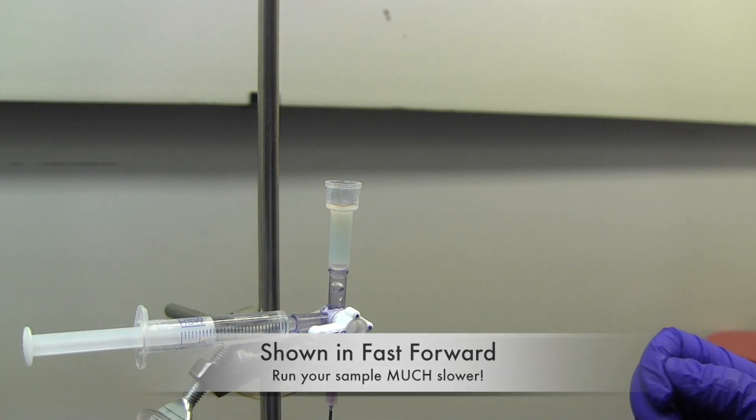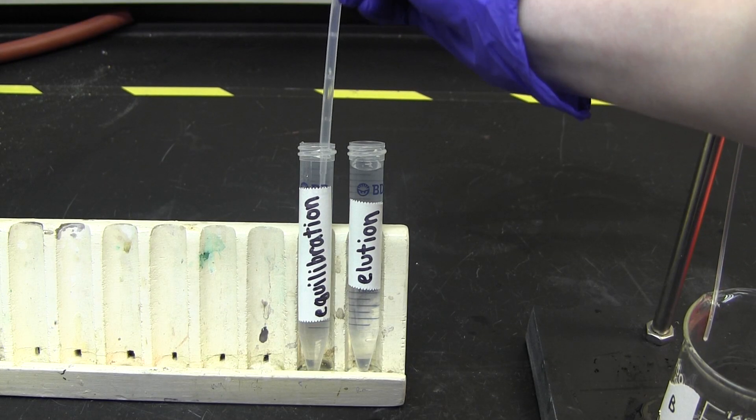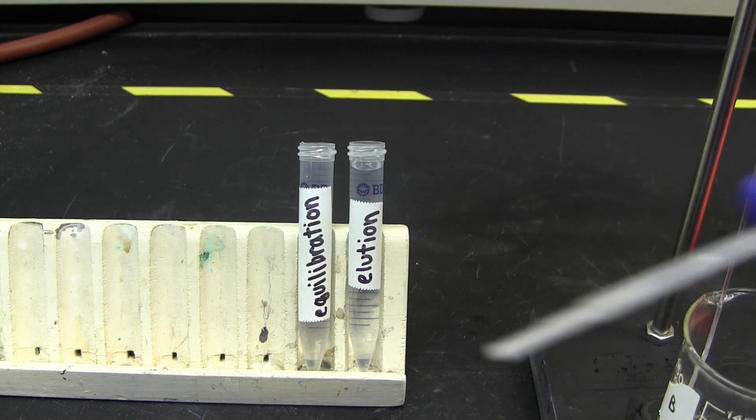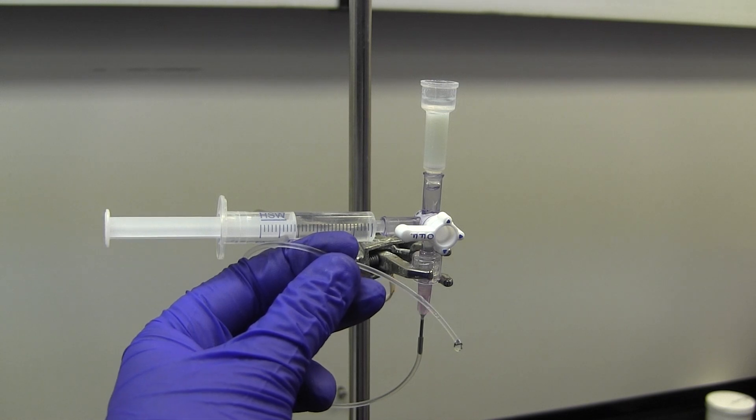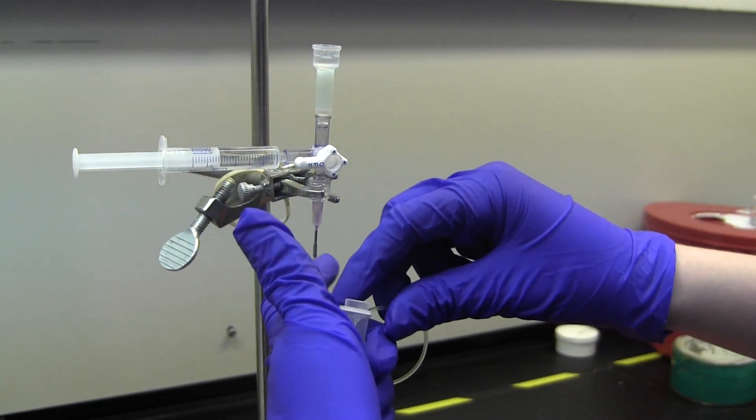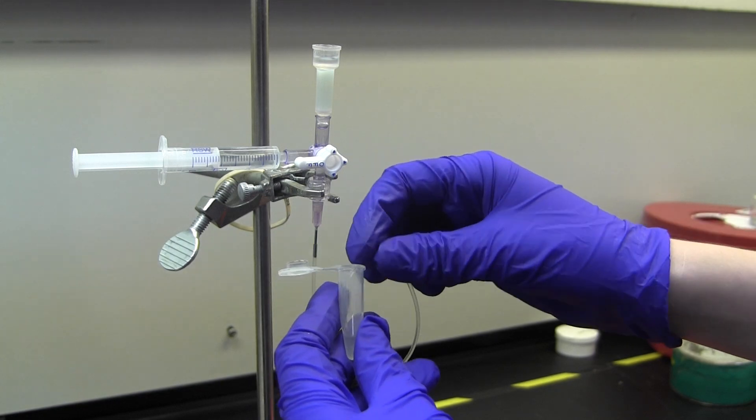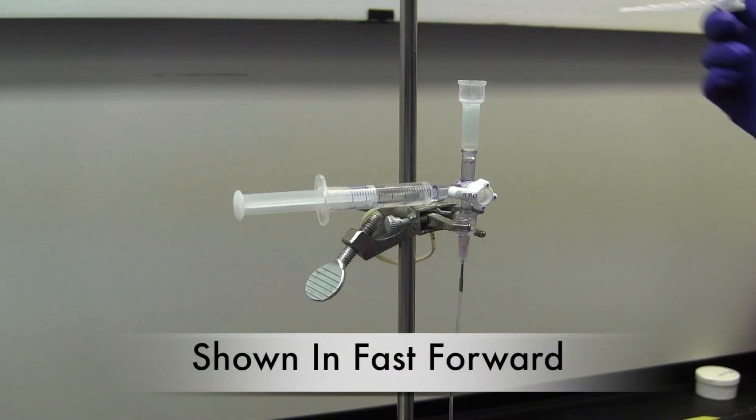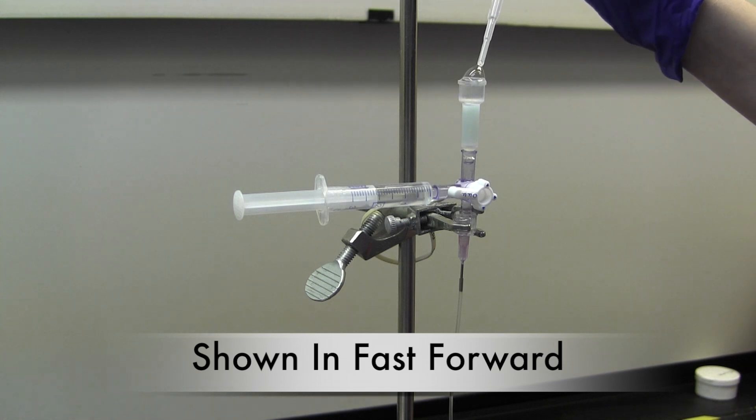Then, wash the column with 0.25 milliliters of equilibration wash. Collect this and discard the fraction. Wash the column with 0.5 milliliters of equilibration solution again. Collect this into a 1.5 milliliter bullet tube. Bullet tubes can be obtained from your TA or instructor. Next, wash the column with 5 milliliters of the equilibration wash and discard.